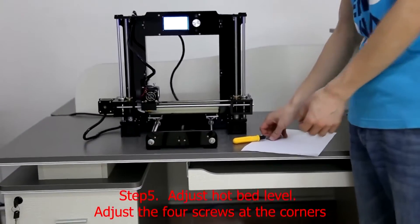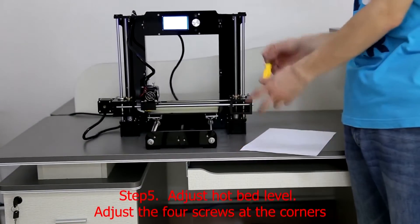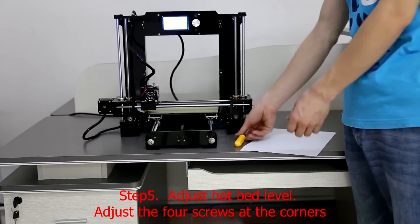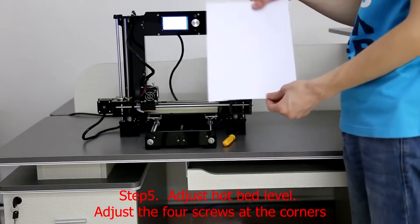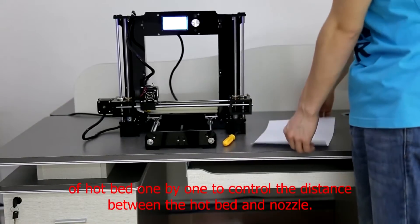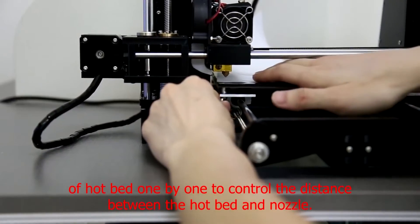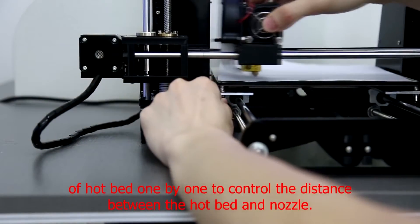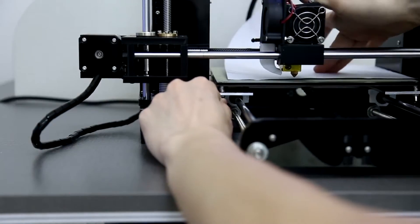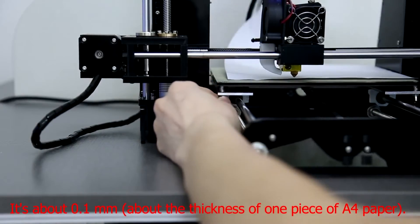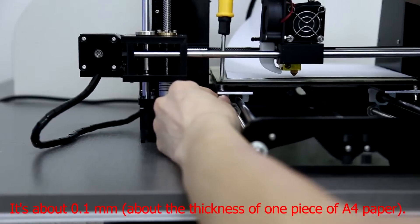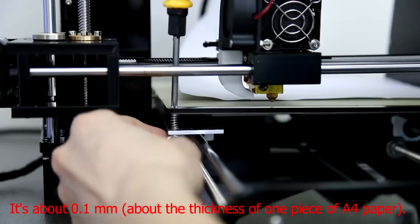Step 5: Adjust the hot bed level. Adjust the four screws at the corners of the hot bed one by one to control the distance between the hot bed and nozzle. The gap should be about 0.1 mm, approximately the thickness of one piece of A4 paper.